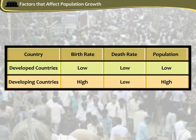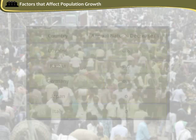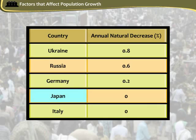Population changes in different countries at different stages as shown in the following table. Countries like Japan and Italy show an even number of births and deaths, thus having a zero or negative population growth.